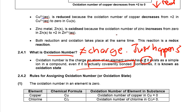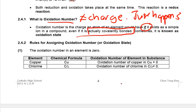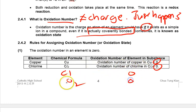There are a few rules for assigning oxidation numbers. The first rule is that every element is given a number of 0. So copper by itself is 0, Cl₂ is 0, Cl by itself is 0, O₂ is 0, and O by itself is also 0. So long as it is an element, the oxidation number will be 0.